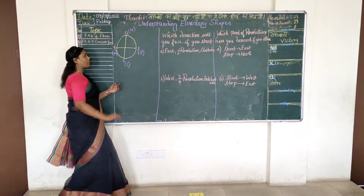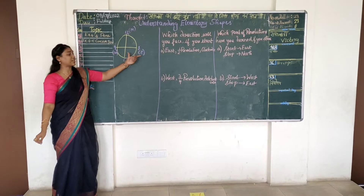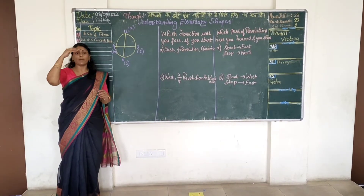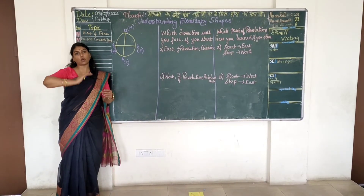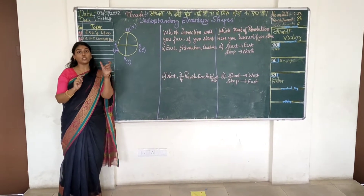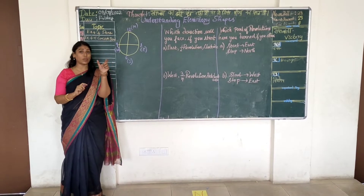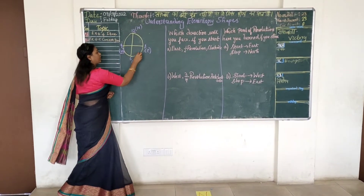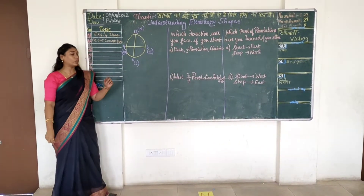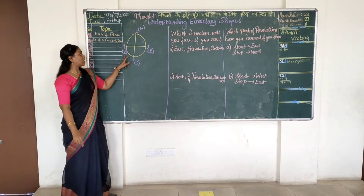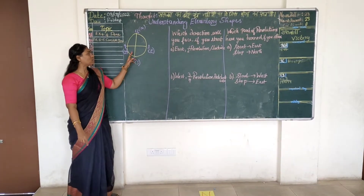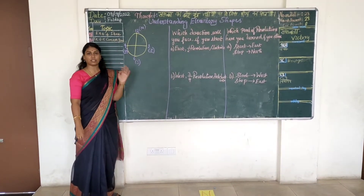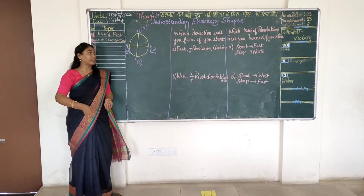To remember West and East, this may sometimes get confused. North will be up and South will be down. To remember West and East, the spelling W-E-V will help you — W is West, E is East.